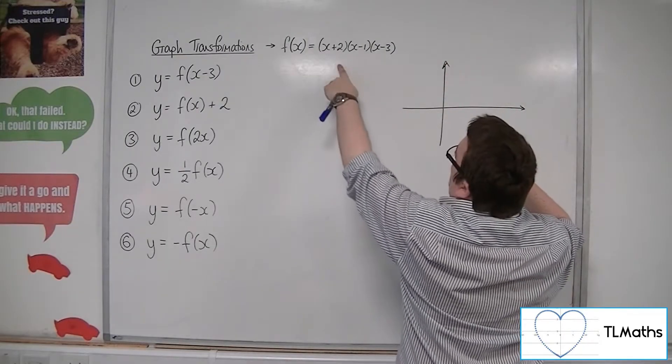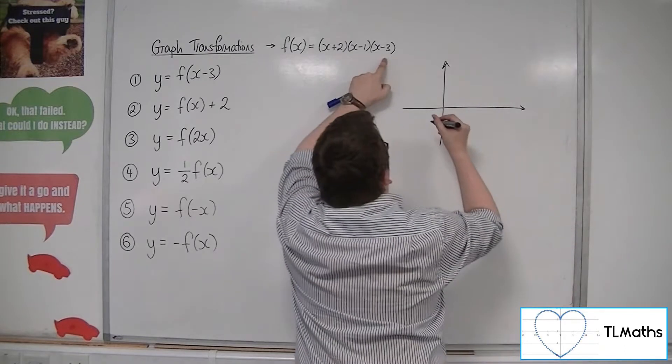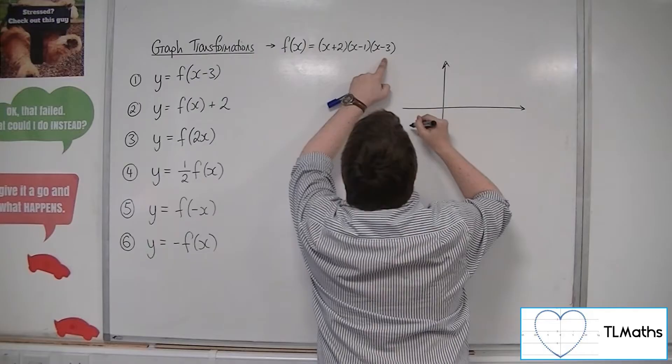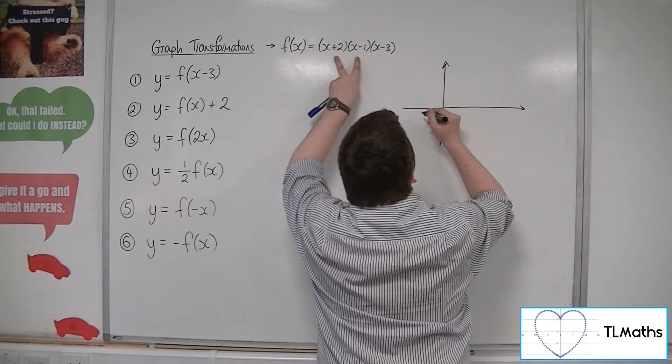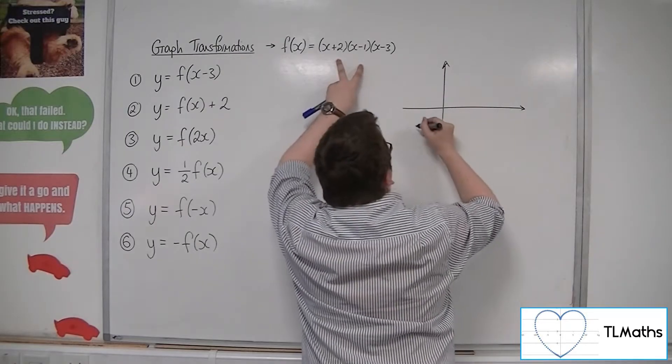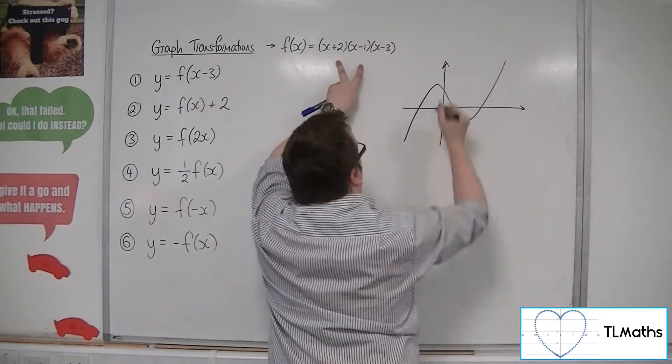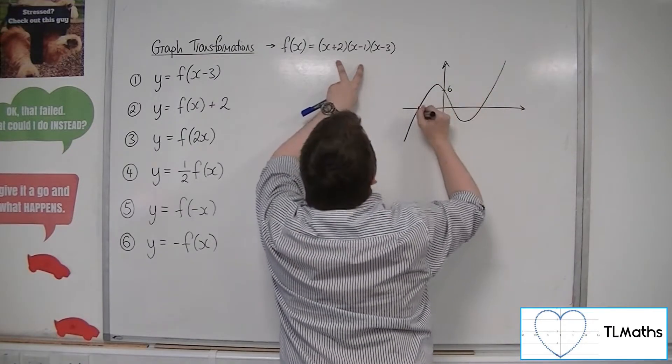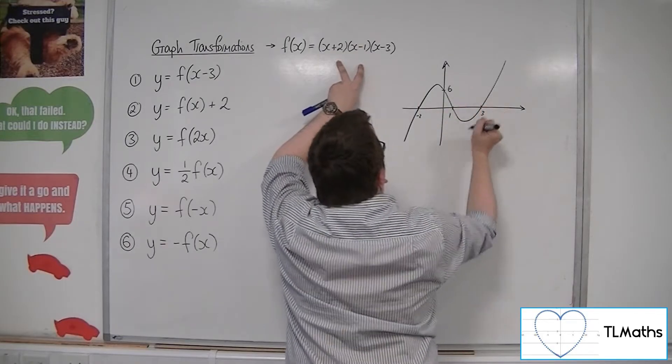So x+2, we're going through -2, 1, and 3. So -2, and we've got it going through 6 on the y-axis. 2 times -1 times -3 is 6. So it should look something like this. There's 6, there's the -2, there's the 1, there's the 3.